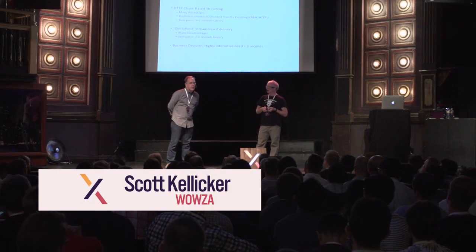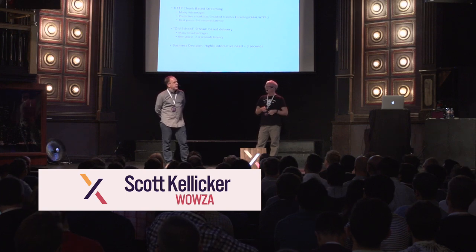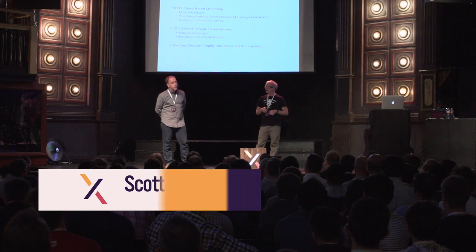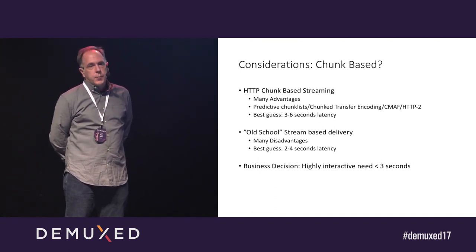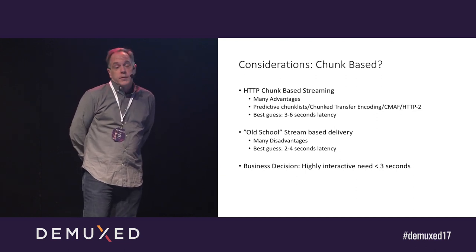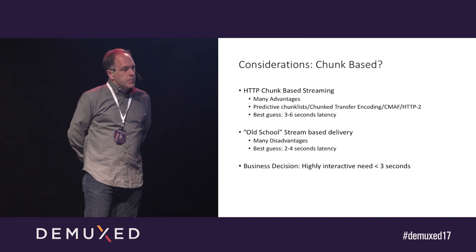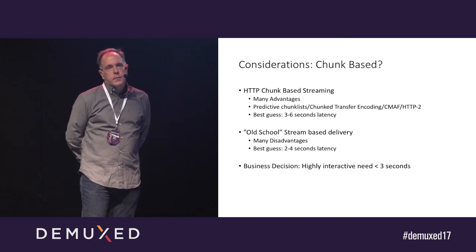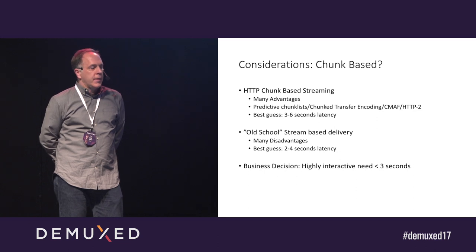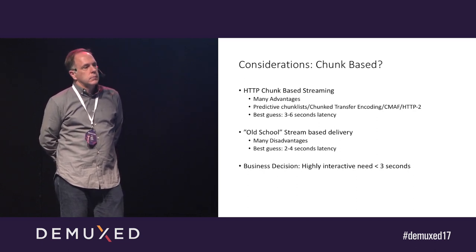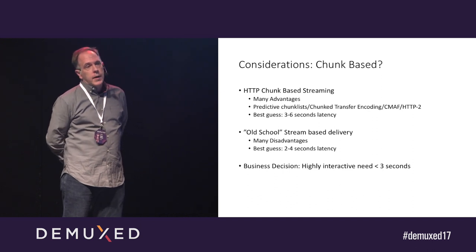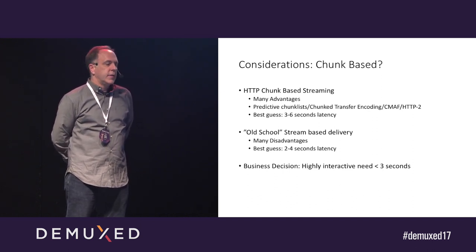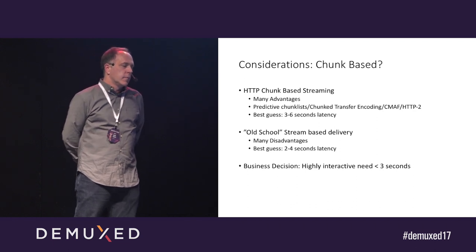We decided to do a prototype, because that's typically the way we learn how things work. Some of the first considerations we made were: should we be chunk-based? There are so many advantages to chunk-based — you have the benefit of the CDN, it lowers your cost, we have great things like peer-to-peer delivery. The whole world has moved to chunks and it gives a great quality experience. However, once we started to look at it, we thought at scale we think we can get three to six seconds. But we thought, what if we use an old-school streaming approach? Streaming originally meant a stream of frames delivered from the server to the client.